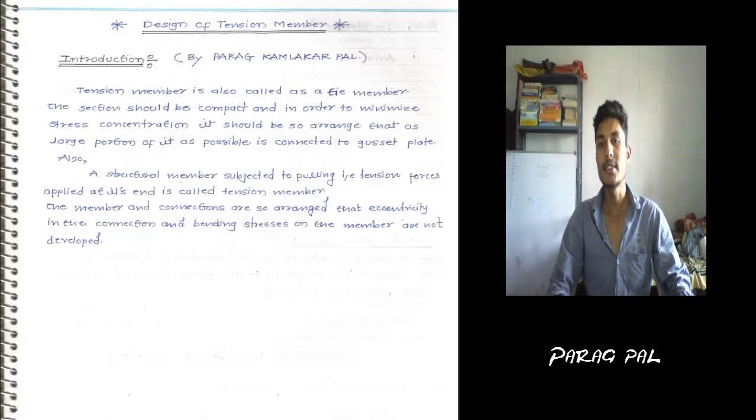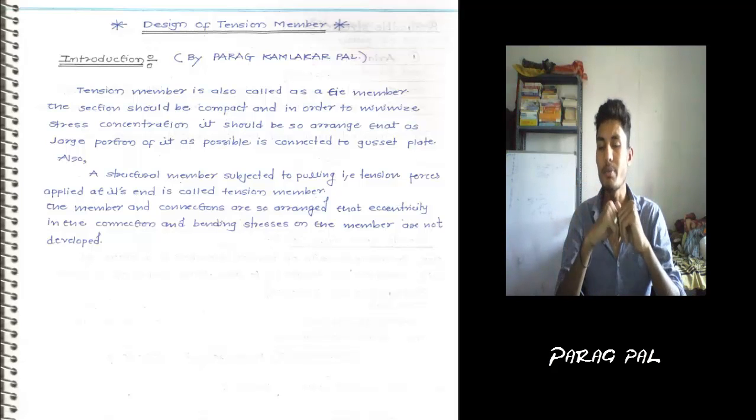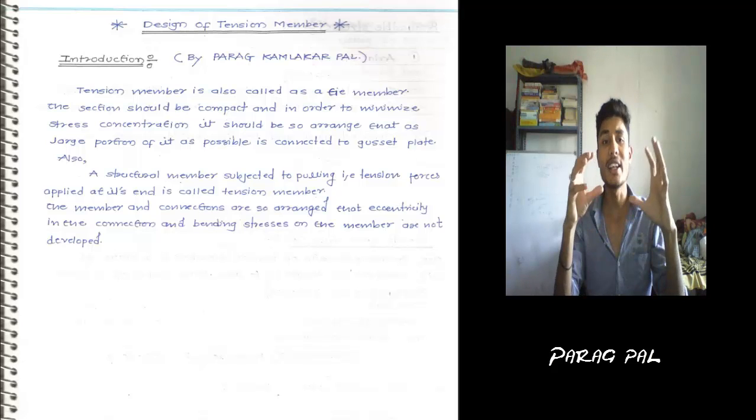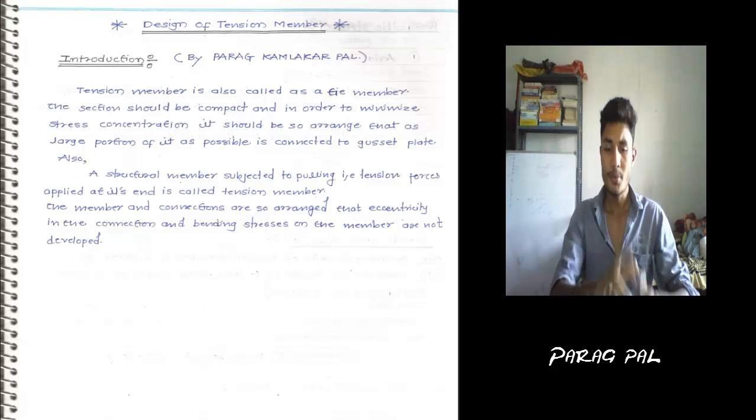The tension member is also called a TIE member. When the TIE member is connected to the Gusset Plate, there is an increase in area. The second paragraph tells about pulling action, tension and stresses developing at the member.